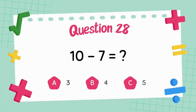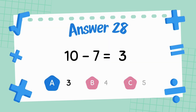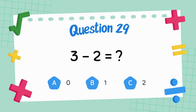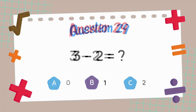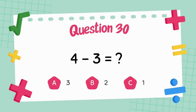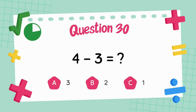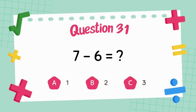What is 10 minus 7? The answer is 3. What is 3 minus 2? The answer is 9. What is 7 minus 6? The answer is 9. What is 10 minus 9?